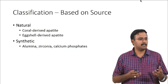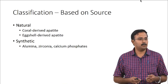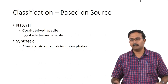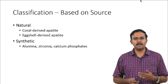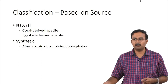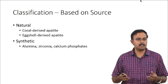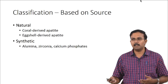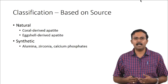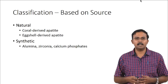Bioceramics can be classified based on the source as natural and synthetic. Natural would be coral-derived apatites and eggshell-derived apatites which have been studied. Coral-derived apatites have been studied for a long time and are even FDA approved for use as bone substitutes. Eggshell-derived apatites are something people are interested in for bone tissue engineering and drug delivery applications.